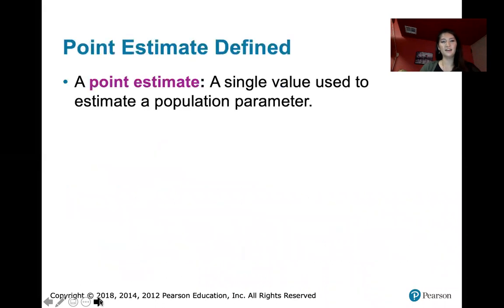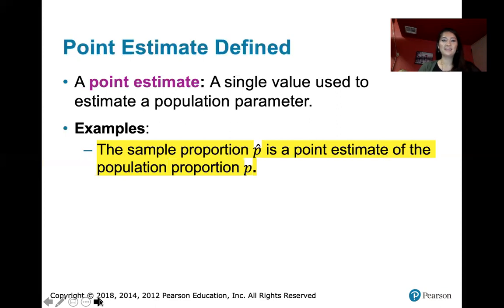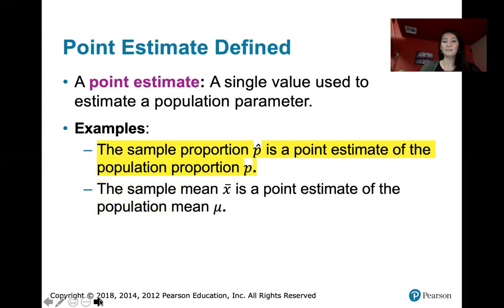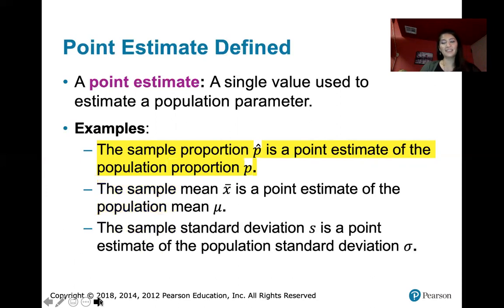A point estimate is just a number — a single value used to estimate a population parameter. Here are some examples. The sample proportion p̂ is a point estimate of the population proportion P. That's highlighted here because the population proportion P is the focus of lesson 7.1. Sample mean x̄ is a point estimate of the population mean μ. And the sample standard deviation s is a point estimate of the population standard deviation σ.